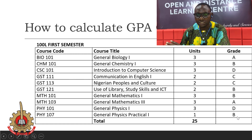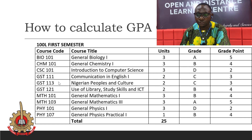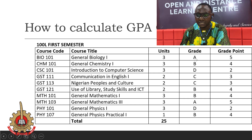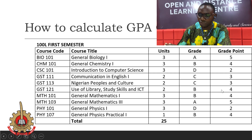For the courses you have registered, let's say you have A, B, D, C for the corresponding courses as the case may be. The next step is to assign the grade points that correspond to each grade. If you have an A, you have 5 points. A B gives 4 points. A D gives 2 points. And a C gives 3 points. You do it like this as shown on the screen.